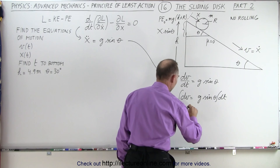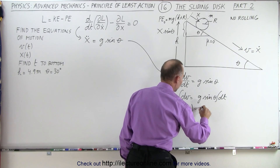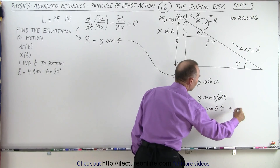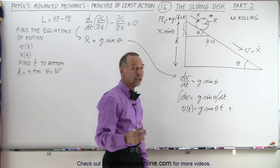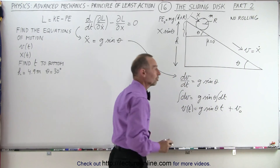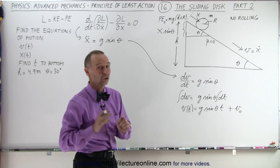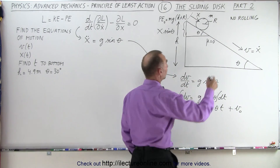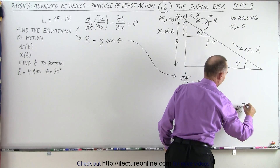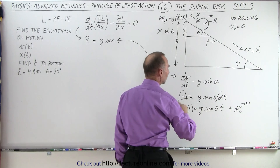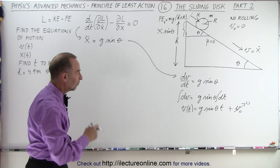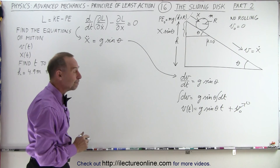That means that the velocity as a function of time is going to be g·sine(θ)·t, plus the constant of integration, which is the initial velocity at the very top. Assuming that v-initial is equal to zero, this term goes to zero, and this is now our equation along the incline: the velocity as a function of time.